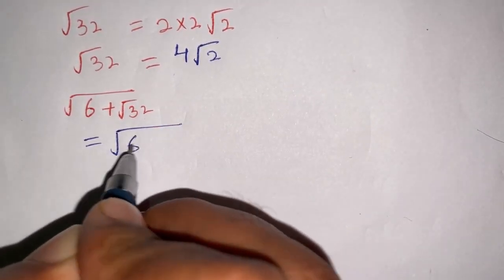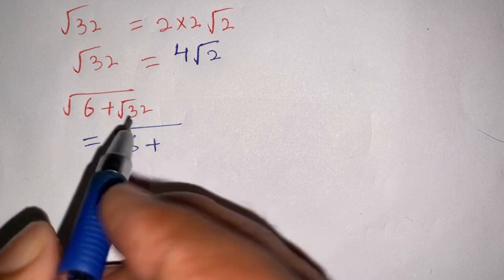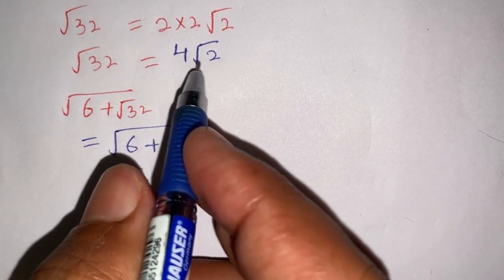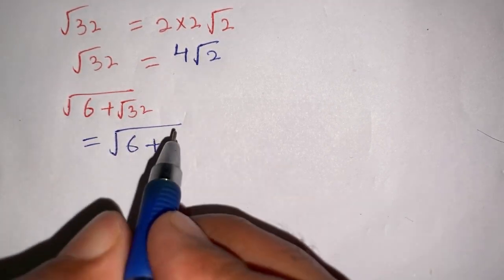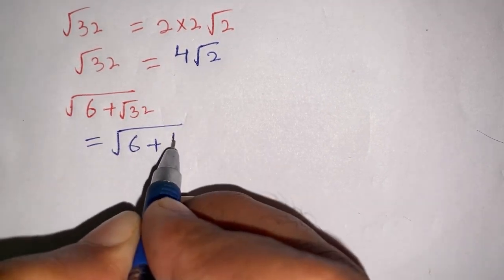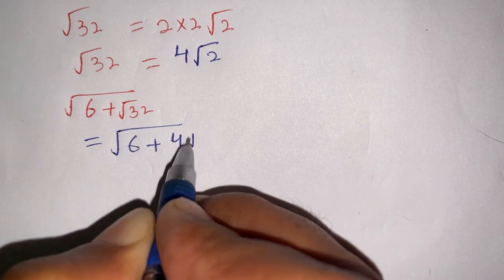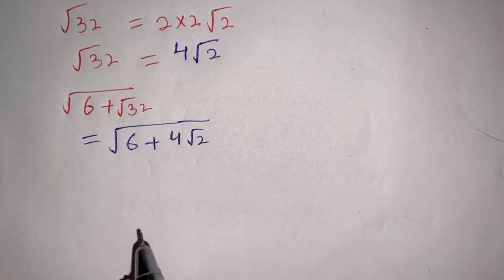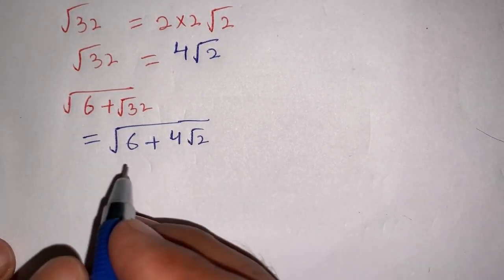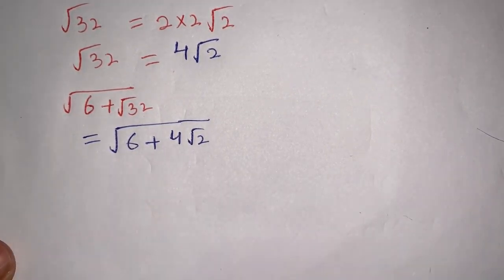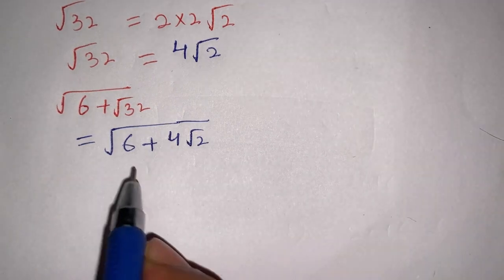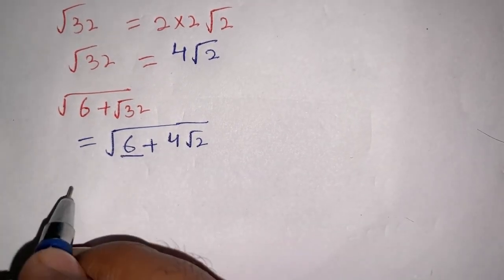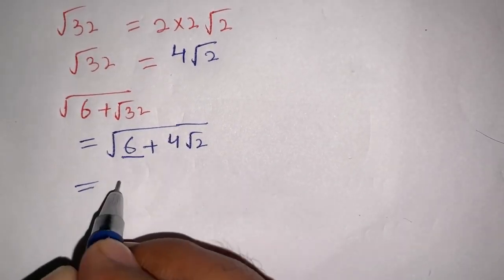Now we have square root of 6 plus square root of 32, which equals square root of 6 plus 4 square root of 2. In the next step we break down 6.